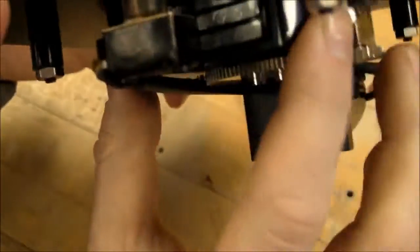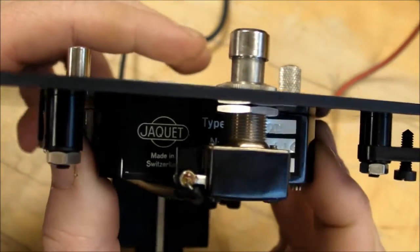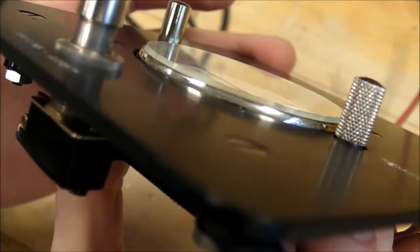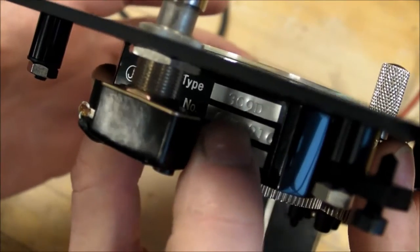And there's a label on the bottom. As you can see, the Jacque made in Switzerland and the model number is 309D. Right there.